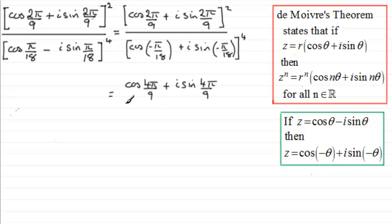And all of this is divided by, and we do exactly the same here, we multiply 4 with the argument. So we do 4 multiplied by minus π over 18, which gives us minus 4π over 18. So we've got the cosine of minus 4π over 18 plus i sine of minus 4π over 18.